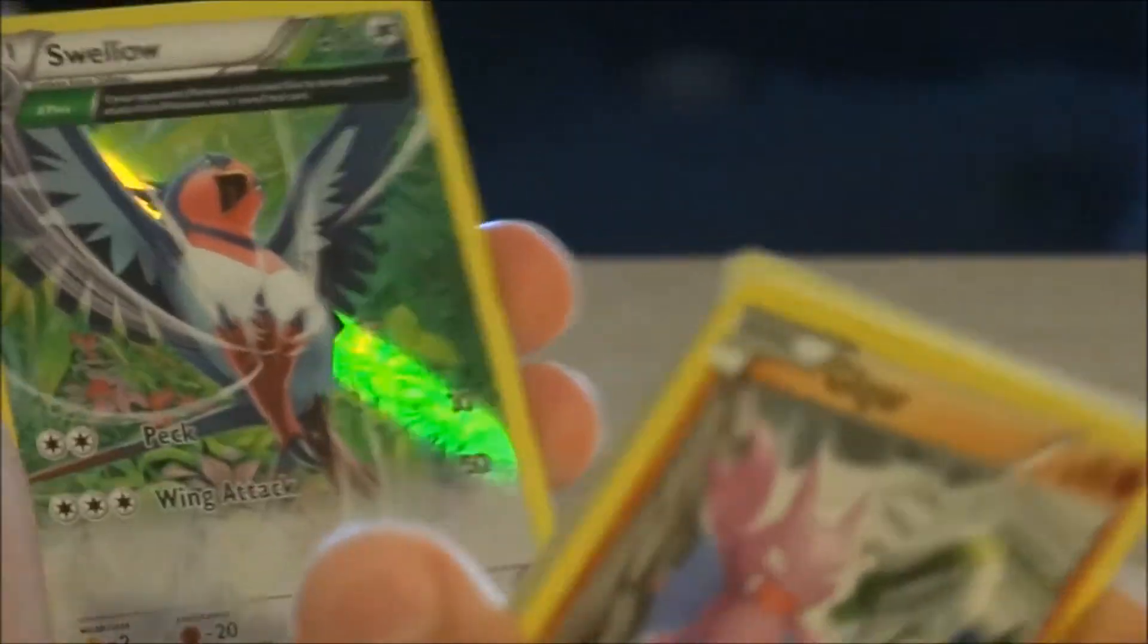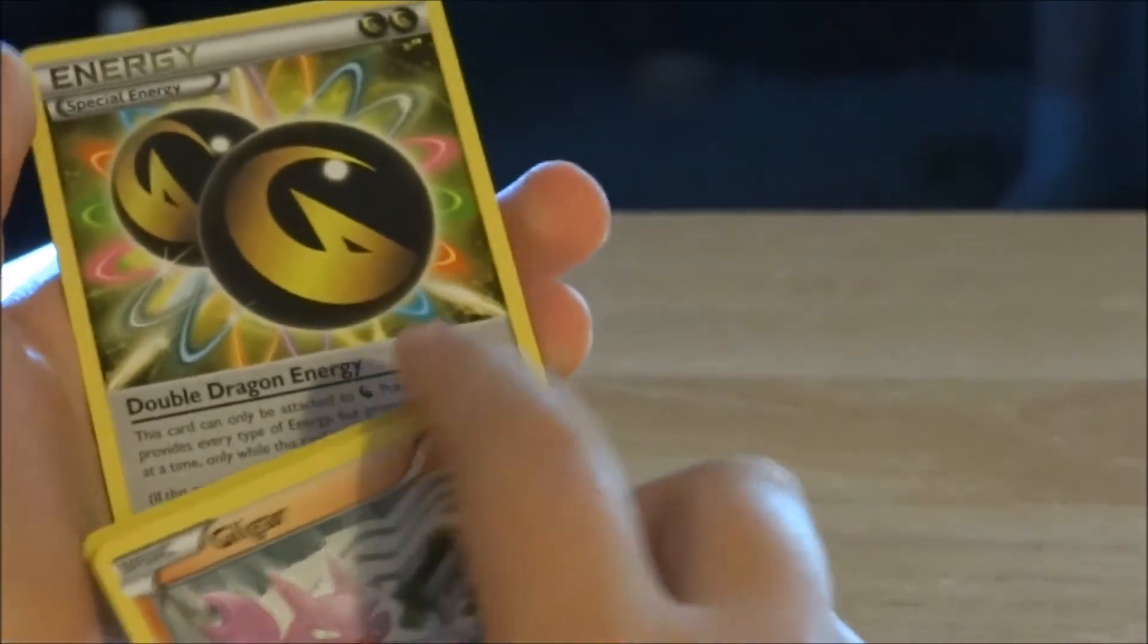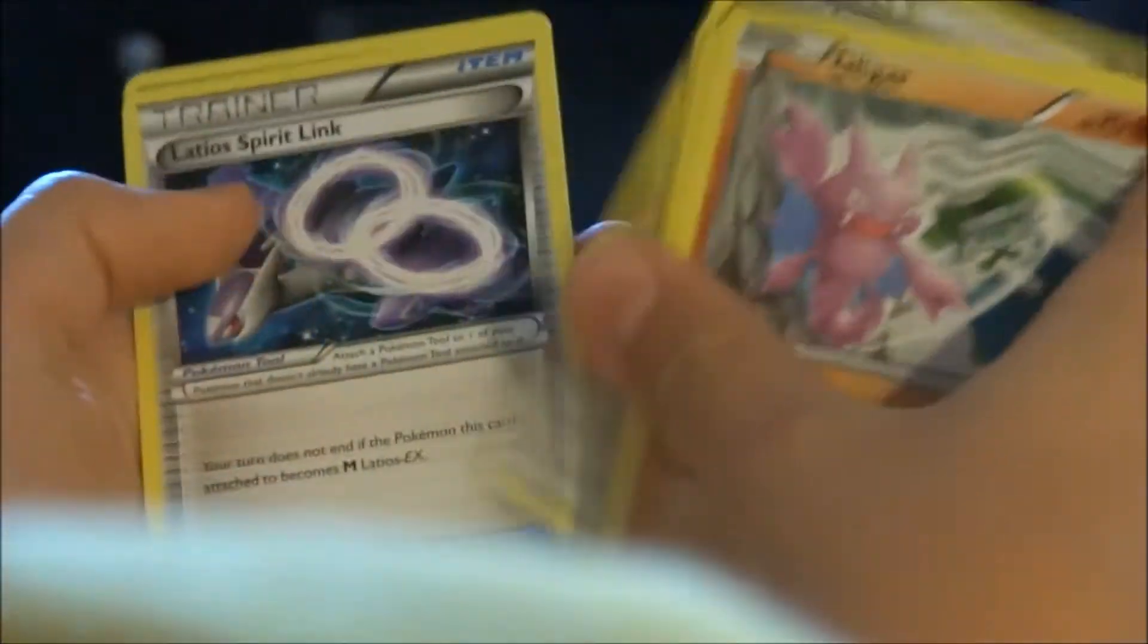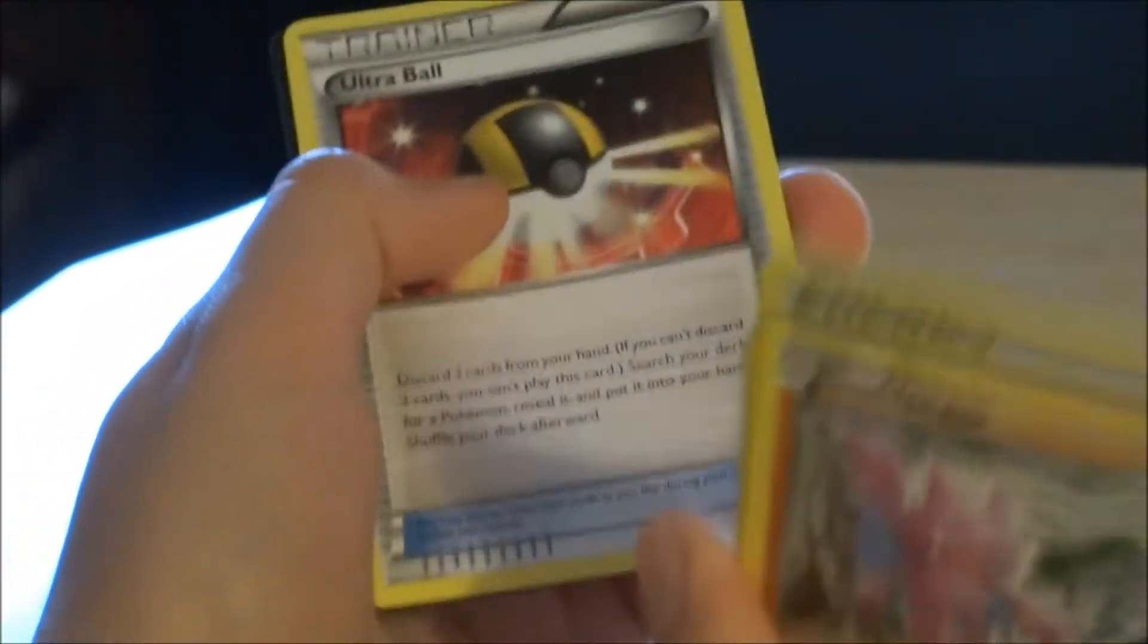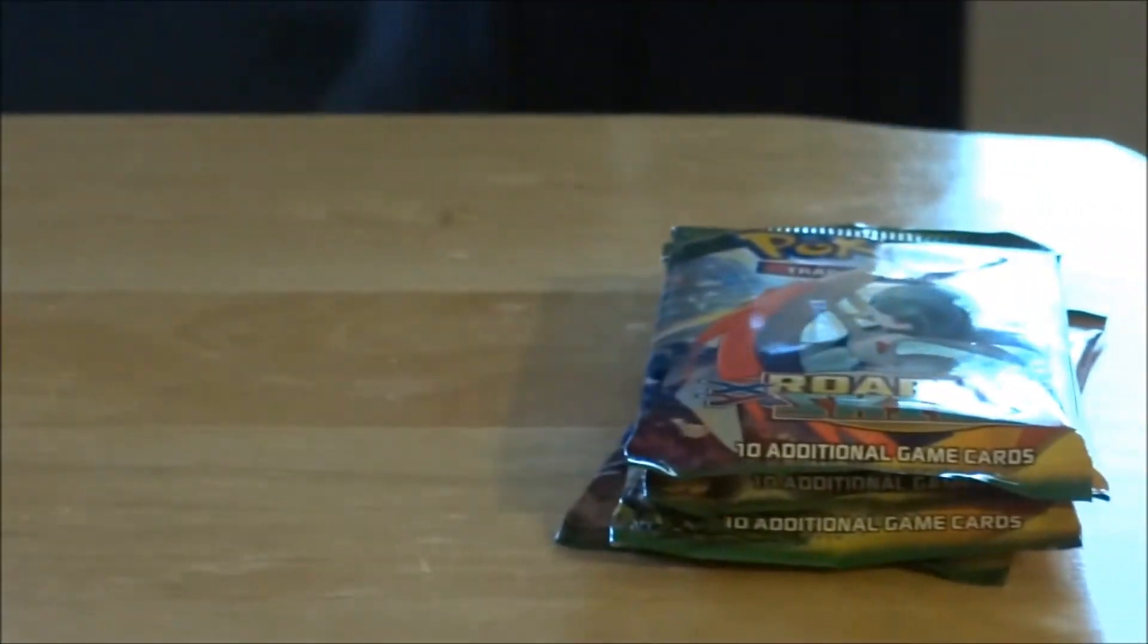Starting to get concerned that we're not getting an Ultra Rare. But yes! Double Dragon Energy. Altaria Spirit Link and Ultra Ball. That's a great card, the Swellow. I mean, it looks great.